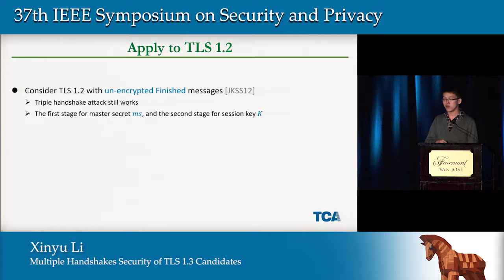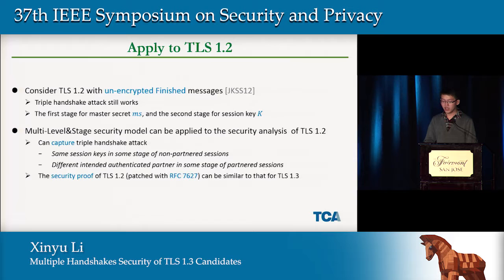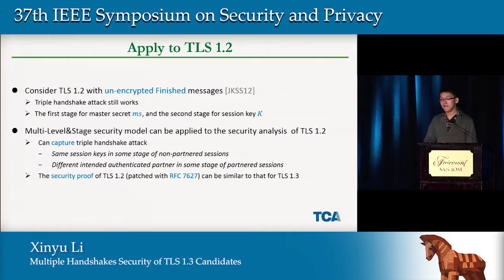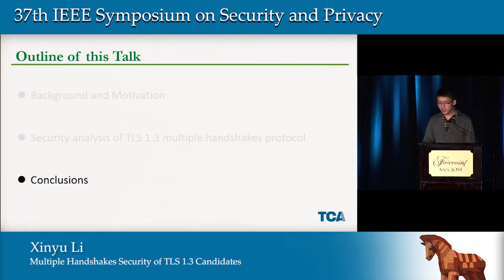We also applied the multi-level and stage security model to TLS 1.2. We consider TLS 1.2 with authenticated finished messages, since unaltered TLS 1.2 cannot be proven secure under the BR-like model — in that case the triple handshake attack still works. The first stage of TLS 1.2 full handshake is for the master secret and the second stage is for the session key. Our model captures the triple handshake attack by satisfying conditions defined by match security, and the security proof of TLS 1.2 patched with RFC 7627 follows similarly to that for TLS 1.3, confirming the soundness of the new security model.